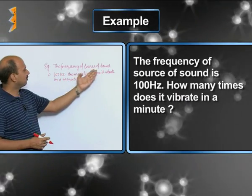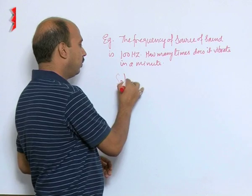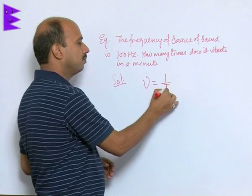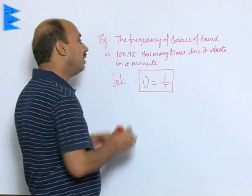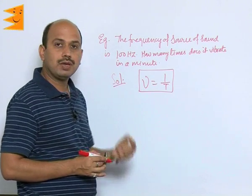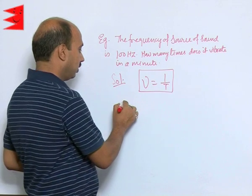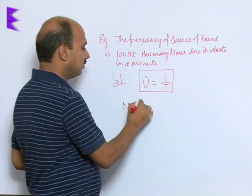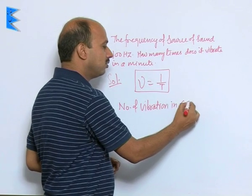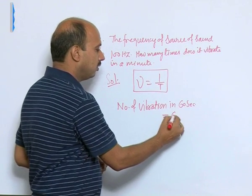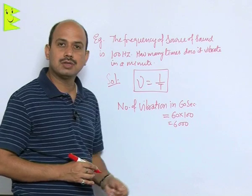The first one is: the frequency of a source of sound is 100 hertz - how many times does it vibrate in a minute? It is very simple. You know frequency nu is equal to 1 upon T. In 1 second it is vibrating 100 times. So the number of vibrations in 1 minute, that means 60 seconds, is equal to 60 into 100, that is 6000. So there are 6000 vibrations in 1 minute.